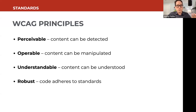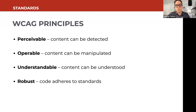WCAG is organized into four principles. Perceivable means content can be detected — this includes making sure images, audio, and video have alternative text, and that there's sufficient contrast for text and graphics. Operable means content can be manipulated — everything works with a keyboard as well as a pointer-based device, and you can control any motion on screen to stop movement. Understandable means content can be understood — the language of the document is declared, forms behave predictably, and errors can be detected and recovered from. Robust means everything adheres to standards so that a variety of assistive technology can access it predictably.